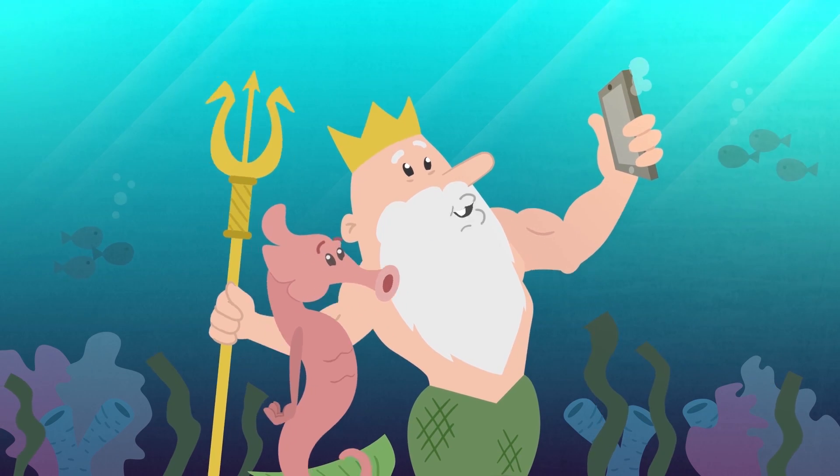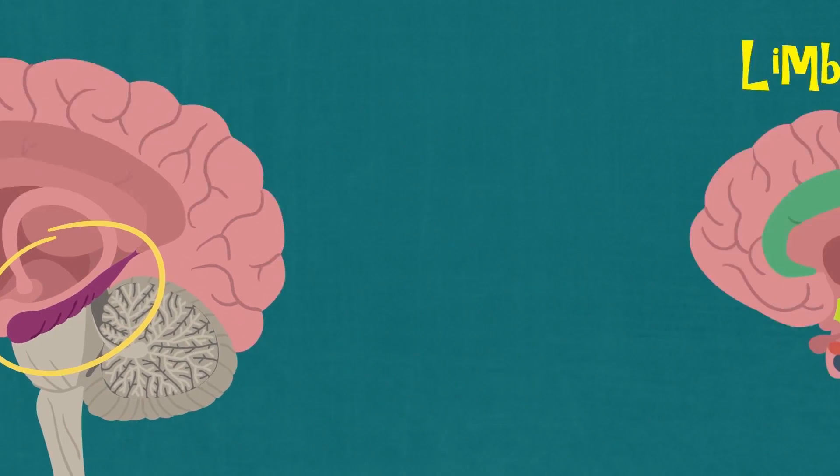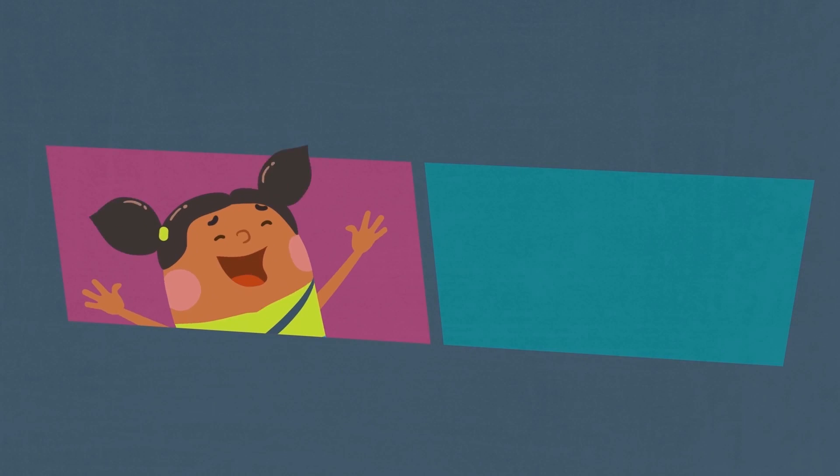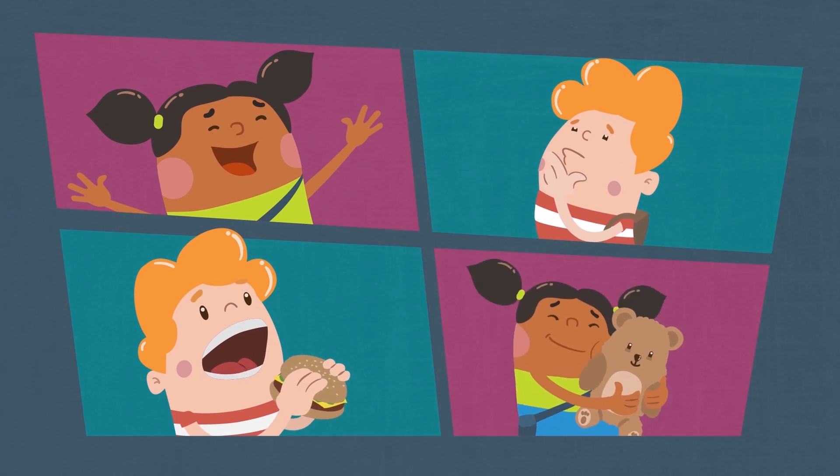Named after the Greek word for seahorse, the hippocampus is part of the limbic system, a set of structures in the brain responsible for emotions, memory, and natural human drives like hunger or caring for offspring.